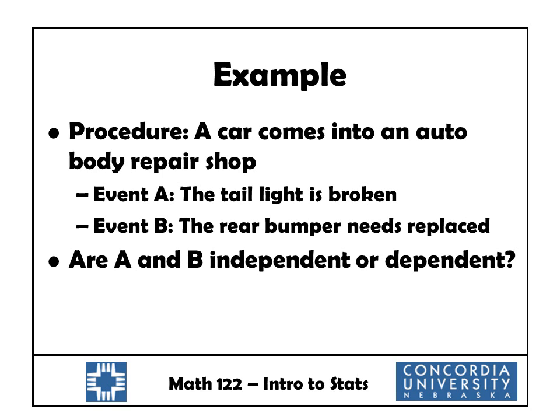Here's another example. A car comes into an auto body repair shop. Event A is the event that the taillight is broken, and event B is that the rear bumper needs to be replaced. Are A and B independent or dependent? Think about this: if the taillight is broken, that's an indication that maybe it got hit from the rear or backed into something. So if that happened, there's a good chance that the rear bumper needs to be replaced. The fact that one of these events occurs does affect the probability that the other occurs, so we would say that they are dependent.